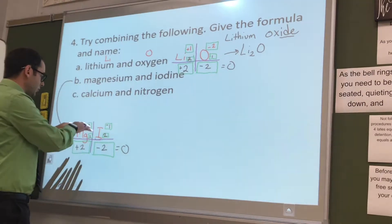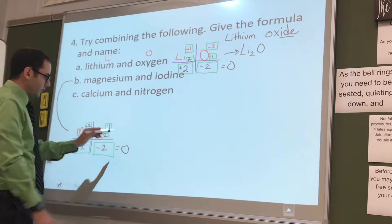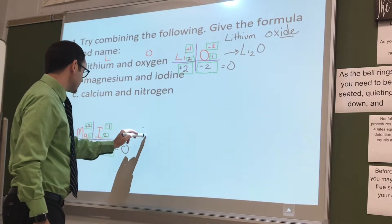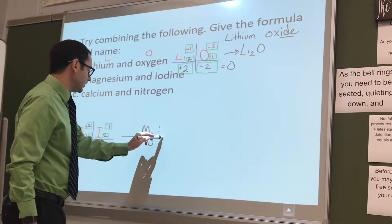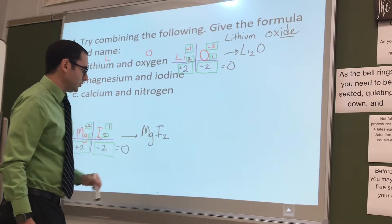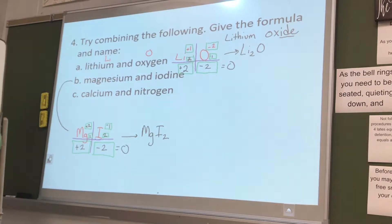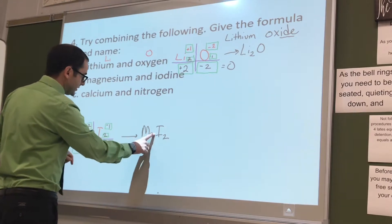Now, we didn't mention it before, but whenever you have ones here, for the final formula, you just leave them off. So, this would just be MgI2. You can't show the ones. If you show the ones, it's wrong. So, you just leave it as this.